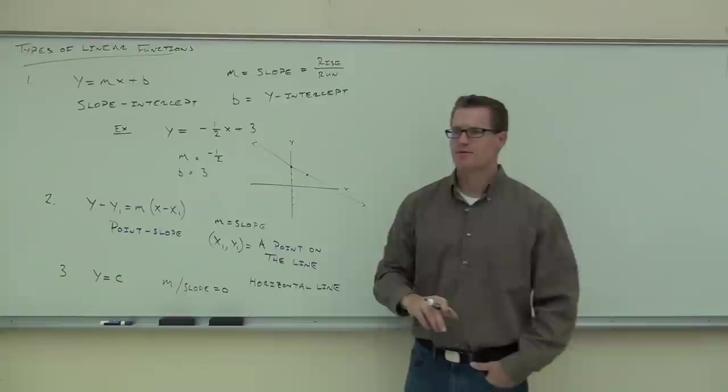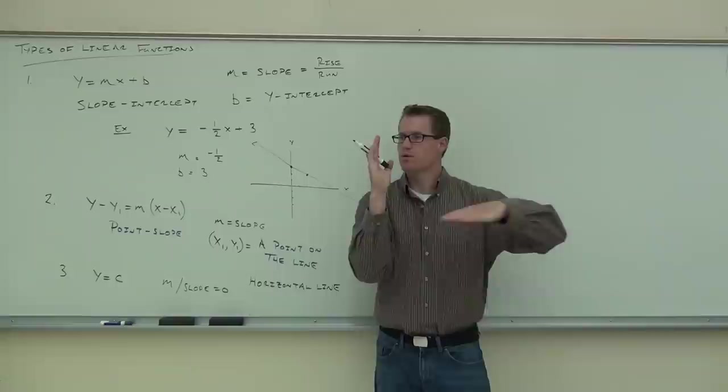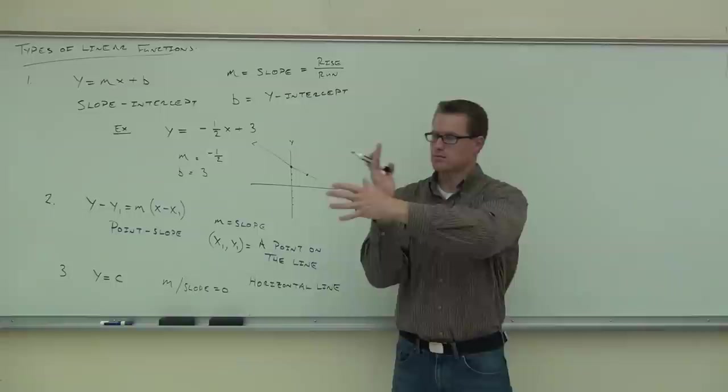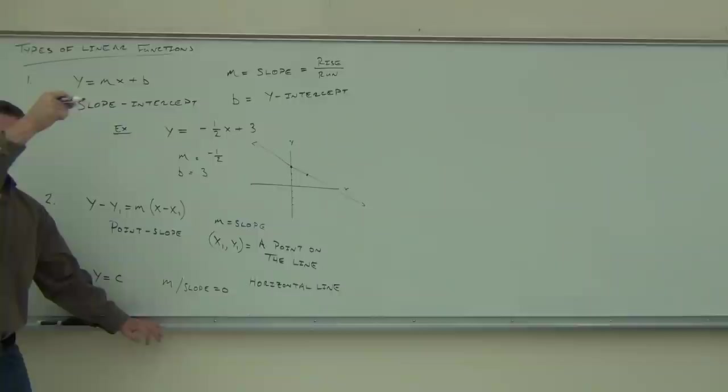Do we have a y-intercept? Are we going to cross the y-axis? Sure — a horizontal line will cross the y-axis. Where? At the constant. So the constant says you're always this number: if y equaled three, we'd always be at three; if y equaled seven, we'd always be at seven. So we're going to cross that specific number. The y-intercept will be 0 comma c — zero for the x and then c for the y-intercept, crossing that constant.